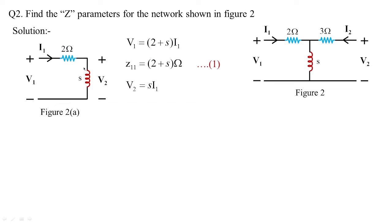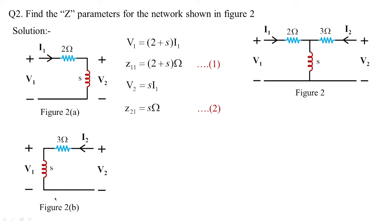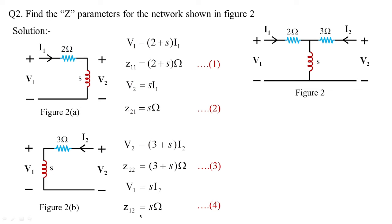Similarly, v2 is measured across the inductor (s), so v2 = s·i1, and z21 = s ohms. When the input port is open-circuited, v2 = (3 + s)·i2, so z22 = (3 + s) ohms. And v1 measured across the inductor gives v1 = s·i2, so z12 = s ohms. Again z12 = z21, confirming the reciprocal nature. The Z parameter matrix is [s+2, s; s, s+3].